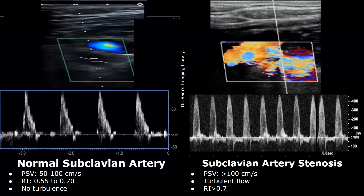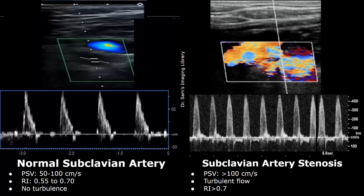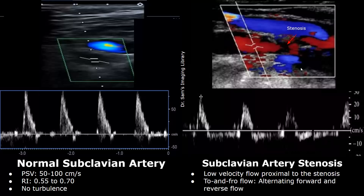Here we have a case of severe subclavian artery stenosis. The PSV is more than 400 centimeters per second. You can also notice turbulent flow in the artery. Turbulent flow is seen as mixing of colors on color Doppler. Proximal to the stenosis, that is just before the stenosis, you may find low velocity flow and to and fro flow as well.